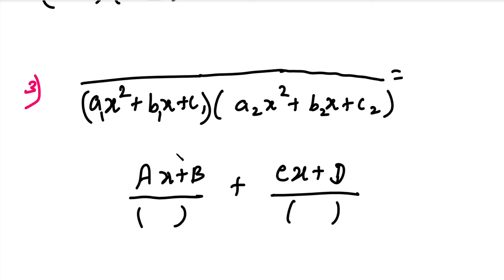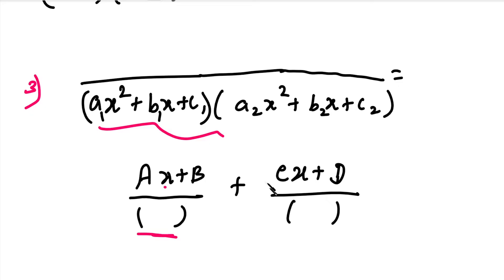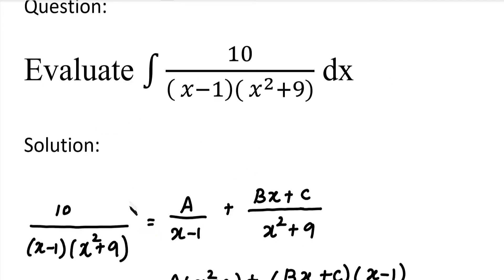In this case, we place a constant in the numerator for each power. For a quadratic factor in the denominator, the numerator takes the form (Ax plus B) divided by the first factor, plus (Cx plus D) divided by the second factor. In our denominator, we have two elements.